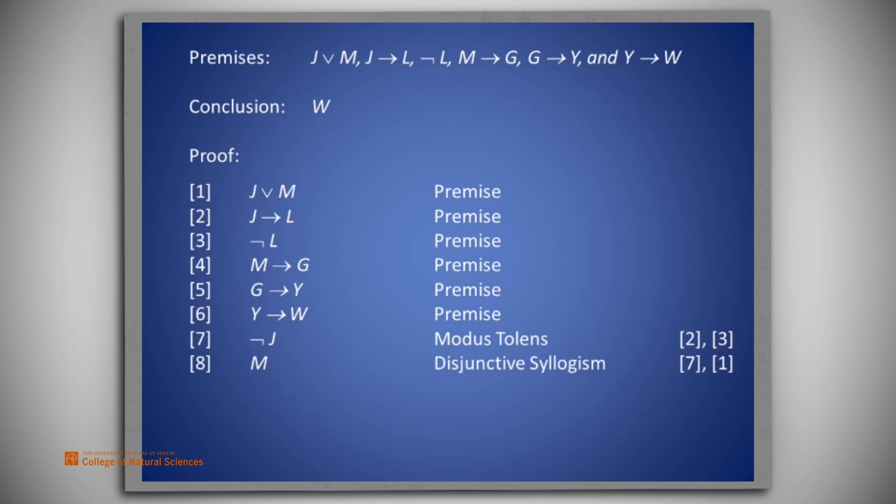Using disjunctive syllogism from lines 1 and 7, we get that M is true. Once we have M, it is a matter of a sequence of three uses of modus tollens to get from M to G, using lines 4 and 8, from G to Y, using lines 5 and 9, and from Y to W, using lines 6 and 10. W was our conclusion.